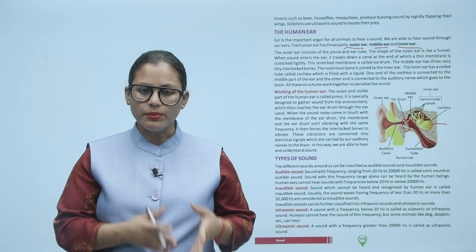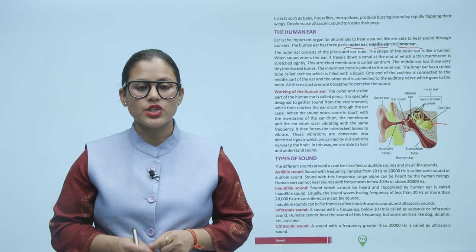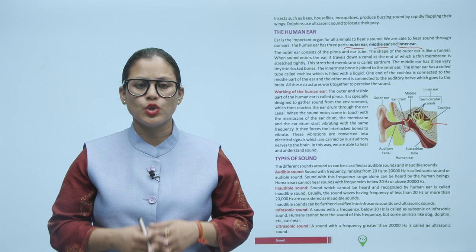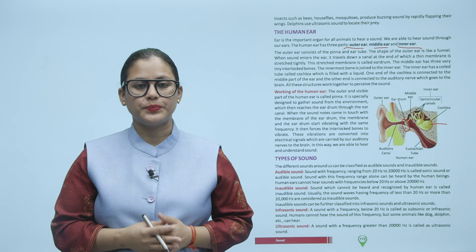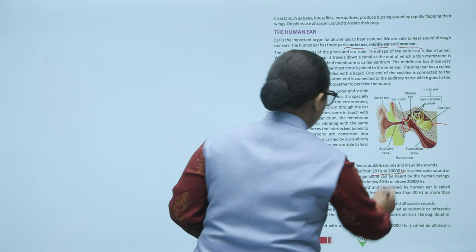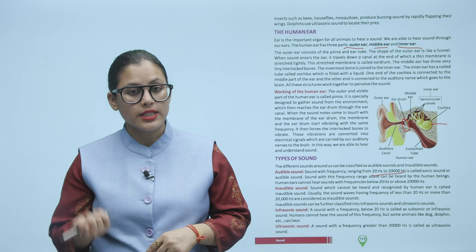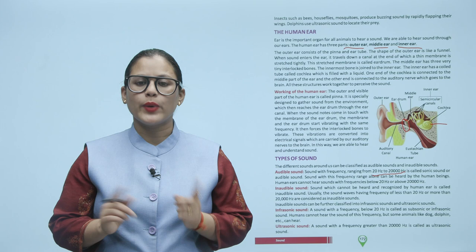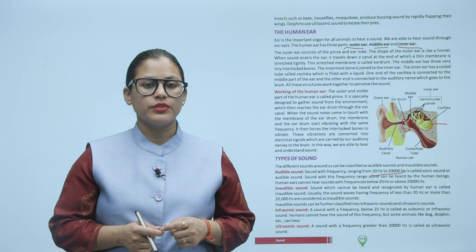Types of sounds. The different sounds around us can be classified as audible and inaudible sounds. Audible sound: sound with frequency ranging from 20 Hz to 20,000 Hz is called sonic or audible sound — this is the only frequency range that can be heard by human beings. Human ears cannot hear sounds with frequency below 20 Hz or above 20,000 Hz. Inaudible sound: sound which cannot be heard and recognized by the human ear is called inaudible sound. Inaudible sounds can be further classified into infrasonic sounds and ultrasonic sounds.